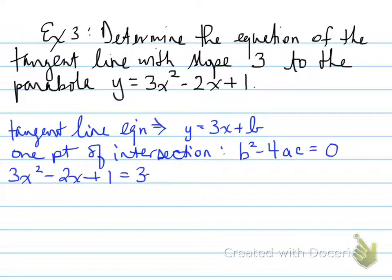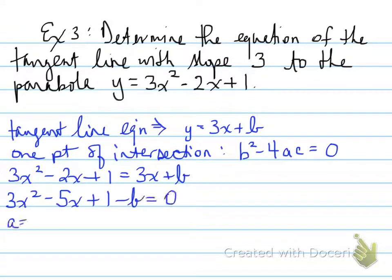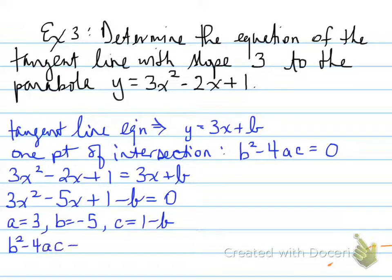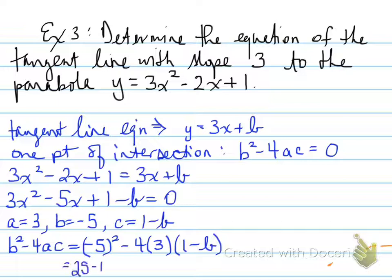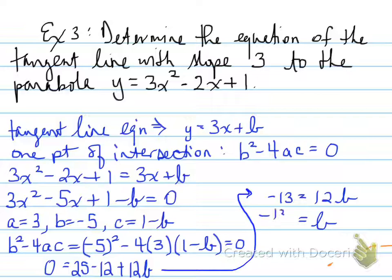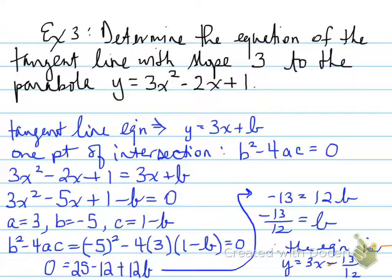Setting the two equations equal to each other, moving everything to one side, identifying a, b, and c, then plugging into the discriminant and setting it equal to 0, we solve for b and find b equals negative 13 over 12. This is the y-intercept, so the equation of the tangent line is y equals 3x minus 13 over 12.